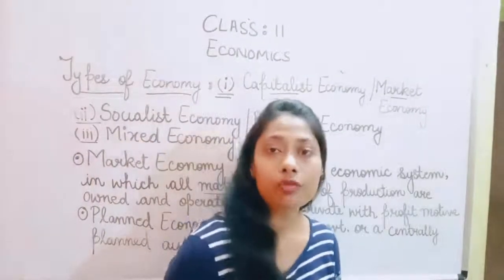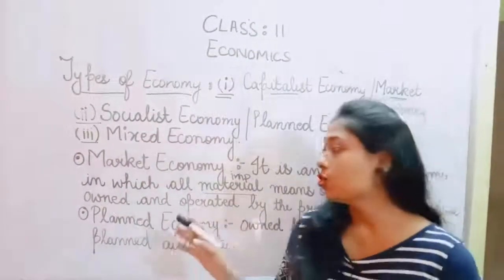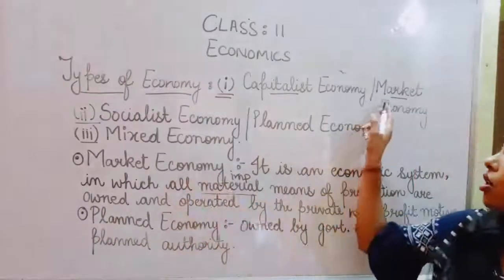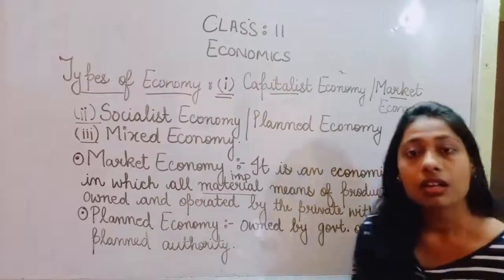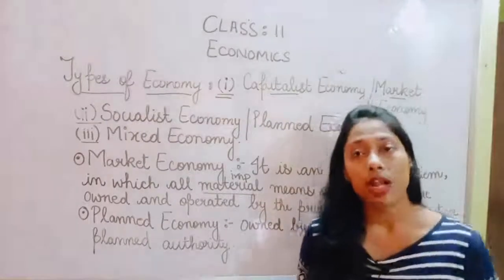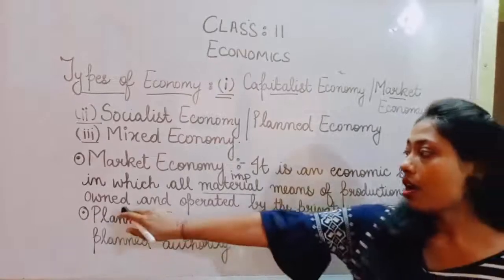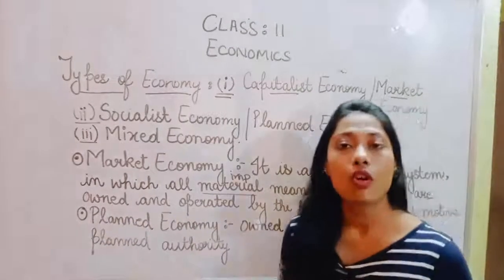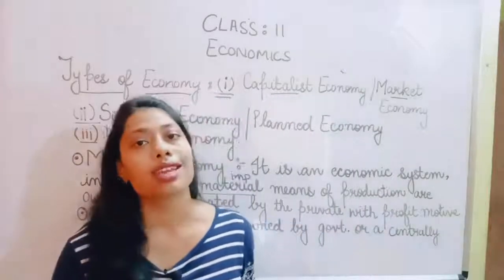Here, every equipment and every factor of production is owned by private individuals and private firms. That is why it is known as a market economy or a capitalist economy. All the means of production are owned and operated by the private sector. There is no involvement of the government sector in this type of economy.